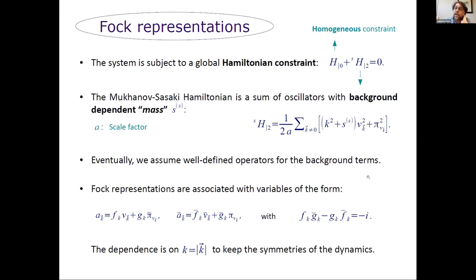In our case, the global system has essentially one relevant constraint. There is a global Hamiltonian constraint in which we find the Hamiltonian of the background and a modification that is quadratic in the perturbations. If we are using Mukhanov-Sasaki gauge invariants for the scalar perturbation, it's what is usually called the Mukhanov-Sasaki Hamiltonian. And apart from an inverse scale factor, it's the sum of all modes of something that is like oscillators with a background-dependent mass. This mass is totally independent of the particular mode that we are considering.